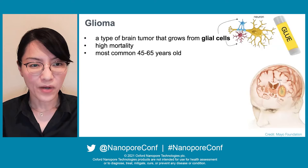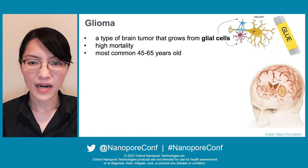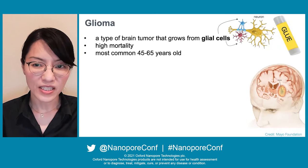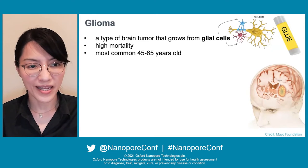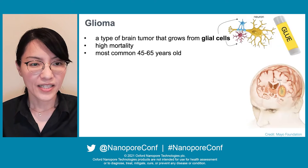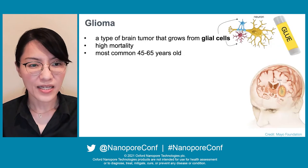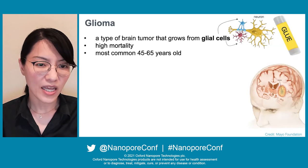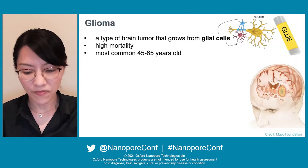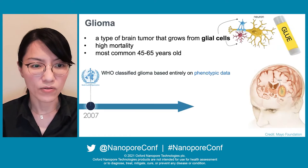Glioma is a type of brain tumor that grows from glial cells — the cells that function to hold neurons together. The mortality rate of glioma is high, and the most common age is about 45 to 65 years old.